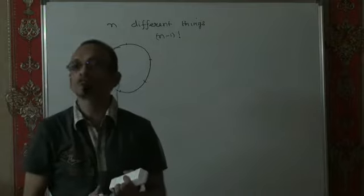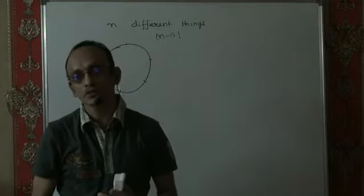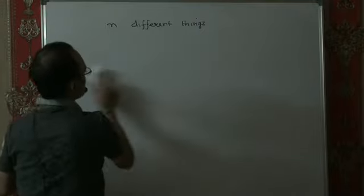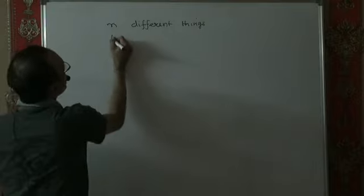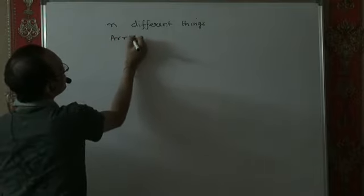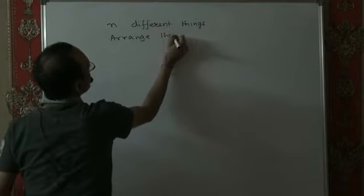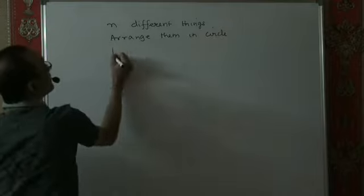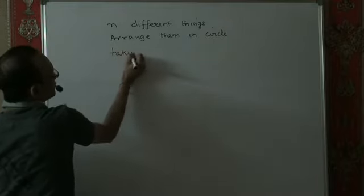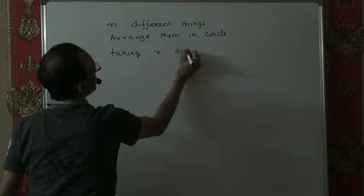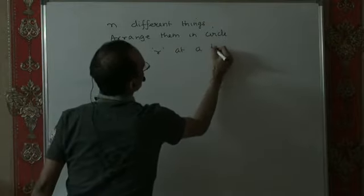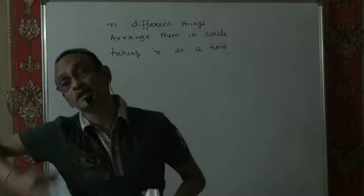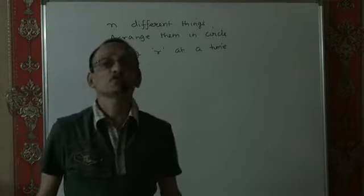Half of this count was clockwise, half of this count was anti-clockwise. Now suppose we have n different things and we want to arrange them in a circle, taking r at a time. What would be the count for the number of permutations of n different things taken r at a time arranged in a circle?